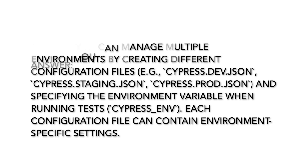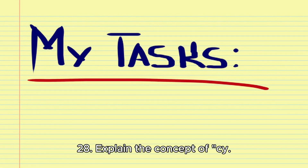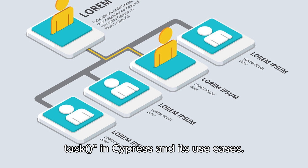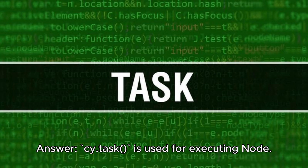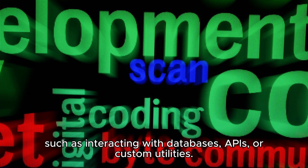Each configuration file can contain environment-specific settings. Question 28/29: Explain the concept of cy.task() in Cypress and its use cases. cy.task() is used for executing Node.js code from your test. It's useful for performing tasks that cannot be accomplished using standard Cypress commands, such as interacting with databases, APIs, or custom utilities.